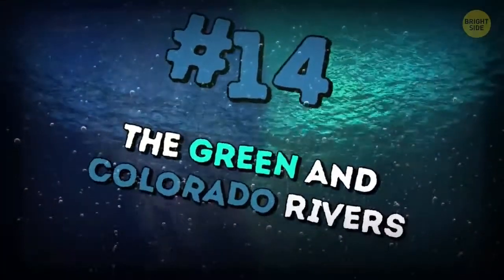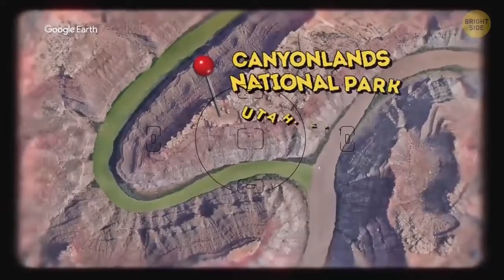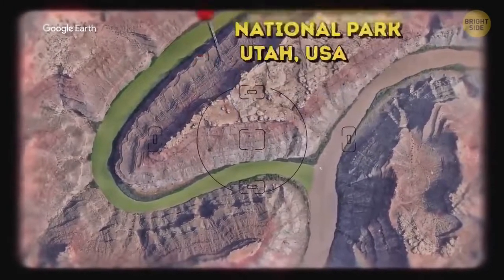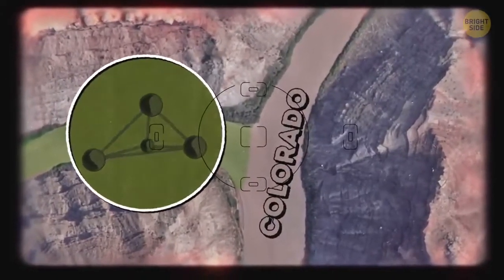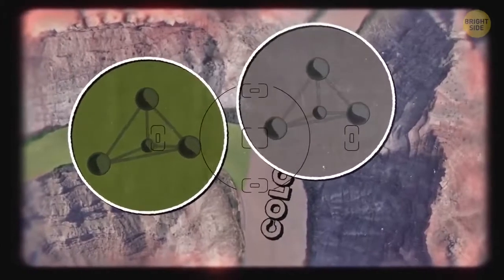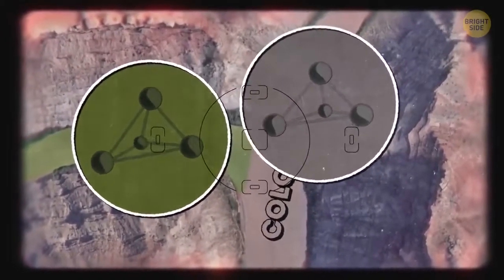The Green and Colorado rivers. The place of their junction is Canyonlands National Park in Utah, USA. Colorado is brown and Green is, yep, green. The colors of these rivers go through rocks with different chemical makeup. That's why they have such a big contrast of colors.